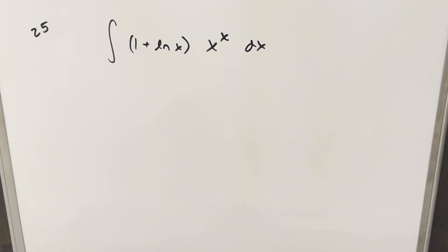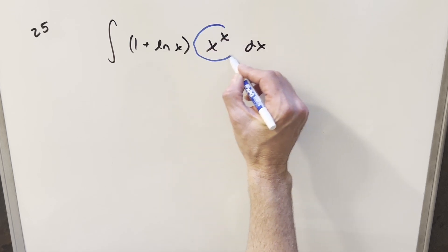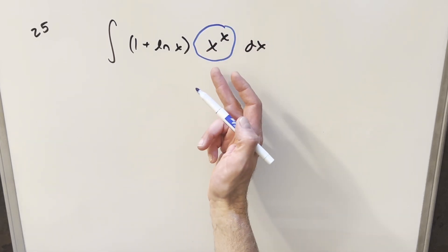Now at first I didn't know exactly what to do, but the thing that really jumps out is the fact that we have x to the x here. We'd really like the base, if we were going to have x in the exponent, we'd like the base to be e.